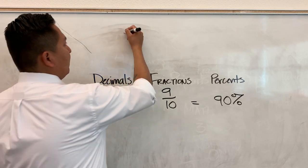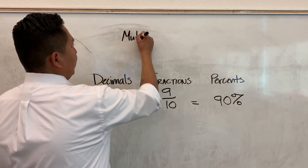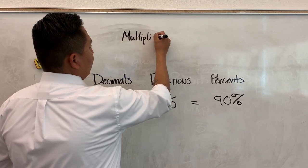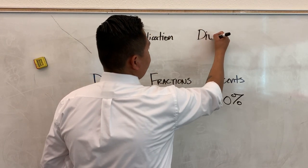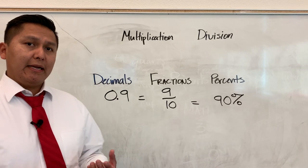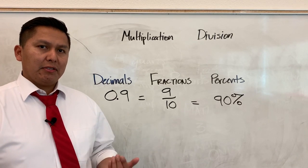All right, so the method I use was that we have multiplication and division. We know that multiplication and division are both inverse operations to each other.